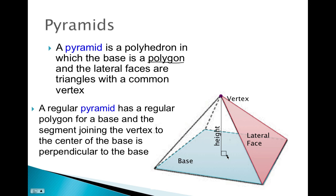Now we're going to get into a special type of pyramid — the regular pyramid. A regular pyramid has a regular polygon for a base, and that is what makes it regular. Remember, regular means it has congruent sides and congruent angles, so it is equiangular and equilateral.